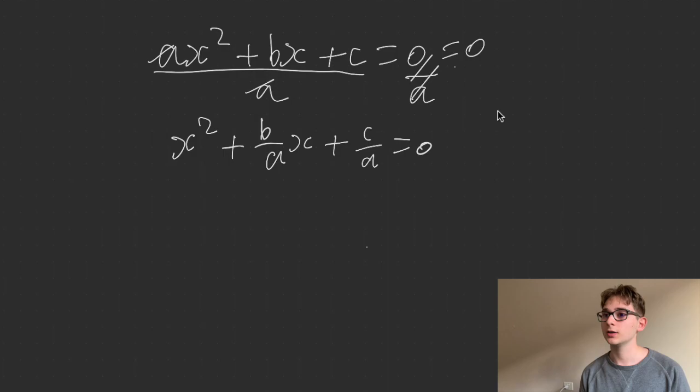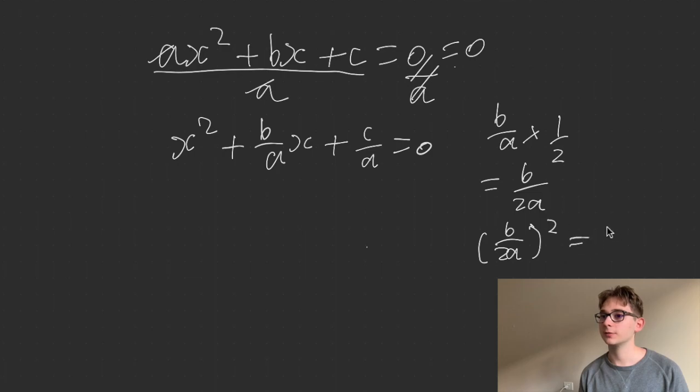So half of b on a is just b on 2a. And then based off what we did before, you want to square this. So you're going to get b on 2a squared, which then is b squared over 2 squared, which is 4, and then a times a, which is a squared.